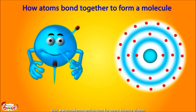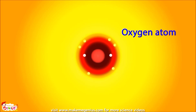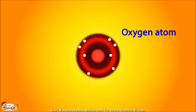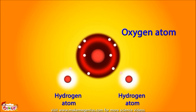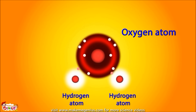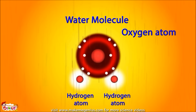Atoms bond with other atoms to form a molecule using valence electrons in the valence shell. Atoms always keep trying to fill their shells. Take, for example, an oxygen atom — in its second shell it can hold up to eight electrons, but the oxygen atom only has six electrons in its second shell, so it is always looking for more. A hydrogen atom has only one electron in its outer shell but can hold two, so it is also looking for more. The oxygen atom bonds with two hydrogen atoms to fill its valence shell by sharing one electron from each hydrogen atom. In this way, the hydrogen atoms' requirement is also fulfilled, as they fill their shells to their capacity of two electrons. By combining together, they become a water molecule.